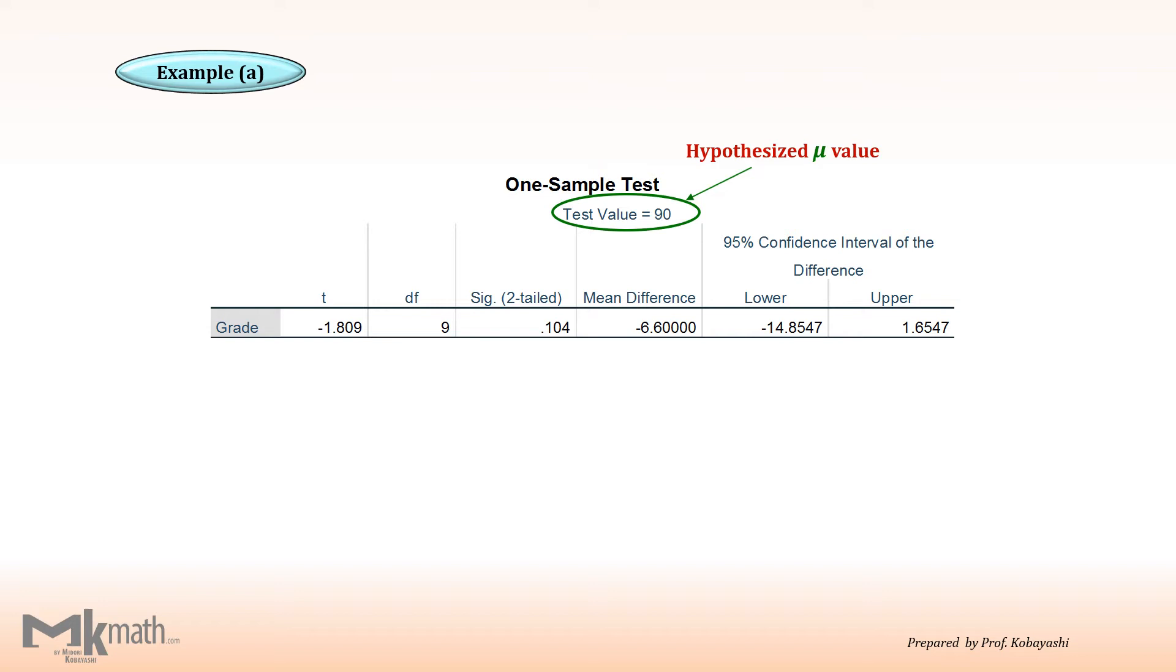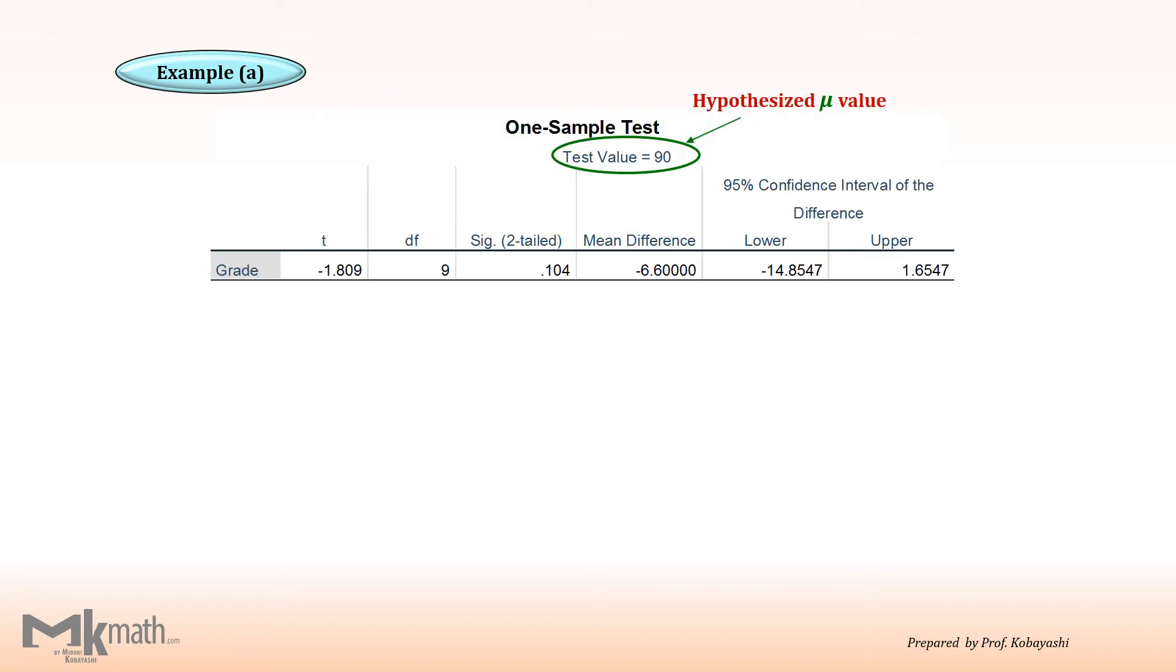Now, the notation for p-value is SIG two-tailed. And please note that SPSS always produces p-value for two-tailed tests. So, if you are doing two-tailed tests, then this 0.104 is the p-value. However, if you are doing one-tailed test, then you have to divide 0.104 by 2 to get the actual p-value. Since we are performing two-tailed tests, p-value for this test is 0.104.